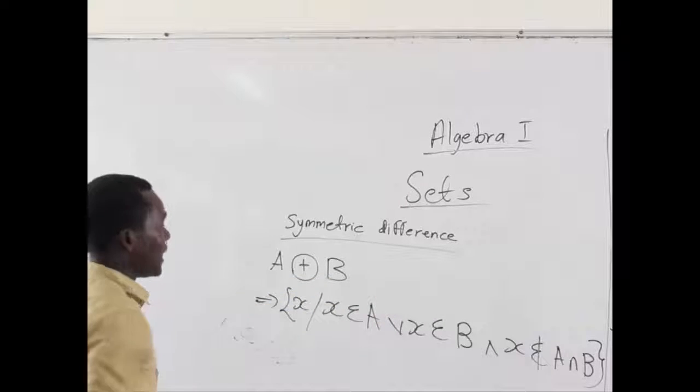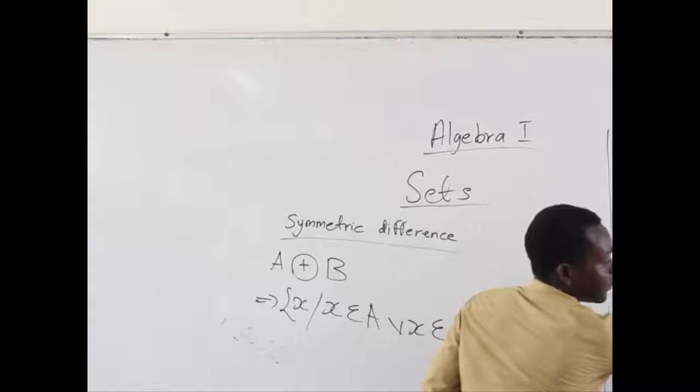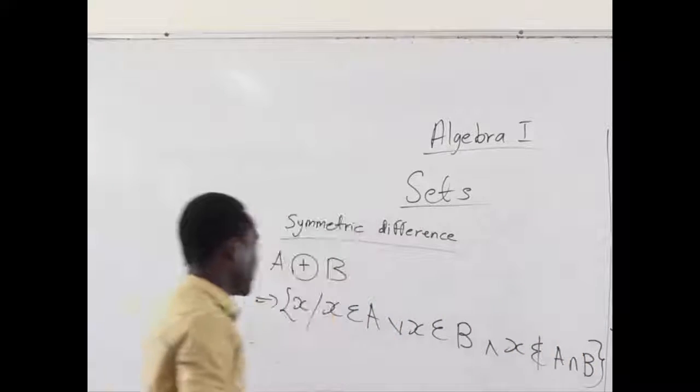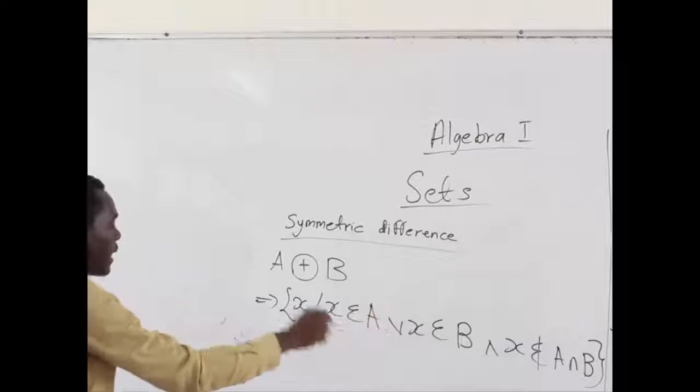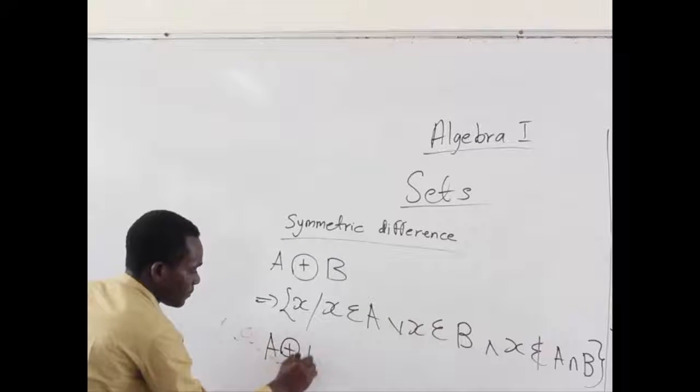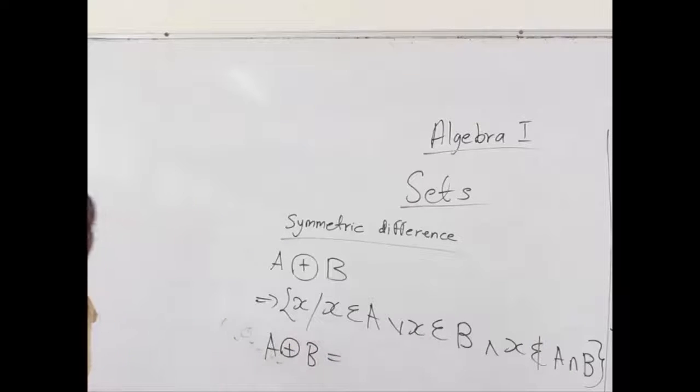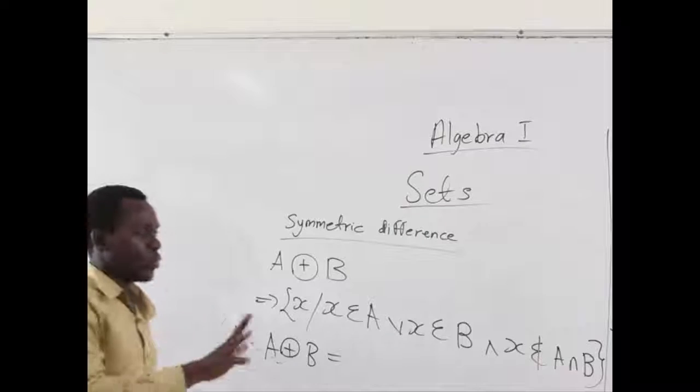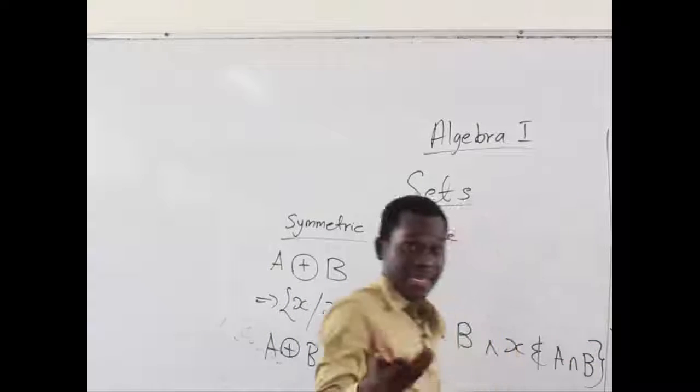So, taking that same example, A as 1, 2, 3, 4, B as 3, 4, 5, and 6. Our Theoretic Difference was 1 and 2. But let's find out what our Symmetric Difference will be this time, taking the definition into consideration. Now, we want elements that appear in A only. We can see that only 1 and 2 appear in A only. So, we place them down.